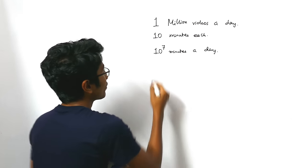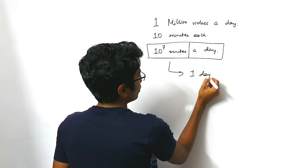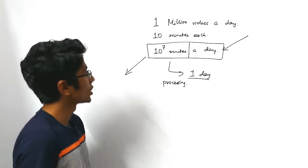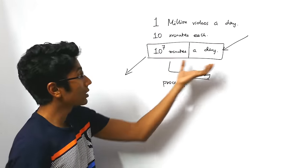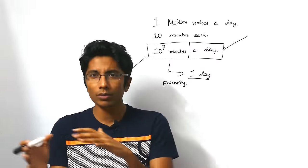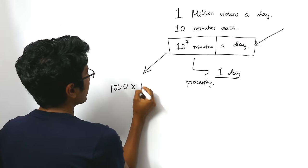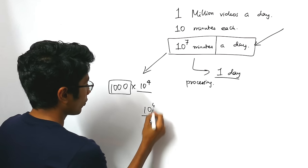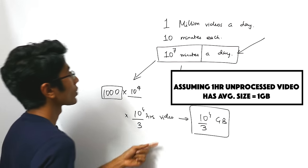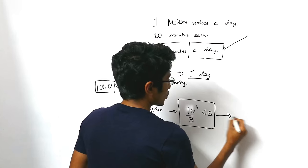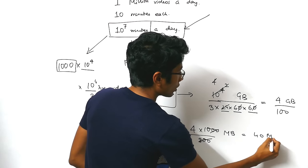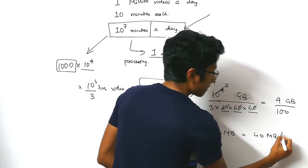You need to process 10 to the power 7 minutes of video in a day. It's equal to the amount of video that is being pumped in. You have to pump that much video out. Currently this metric is not making much sense because this is telling you something in terms of time. And this is telling you something in terms of time again. What we want to know is how much MB can be processed per second. Computers usually talk in terms of nanoseconds, milliseconds or seconds. 1000 into 10 to the power 4. This is 10 to the power 4 divided by 3 hours. 10 to the power 4 by 3 GB of video to be processed in a day. But how much is that in seconds?